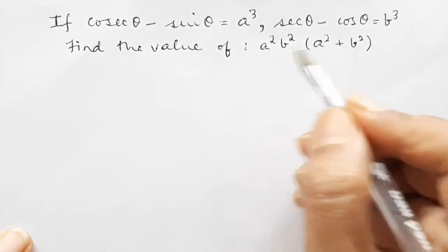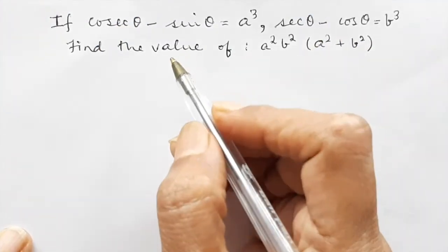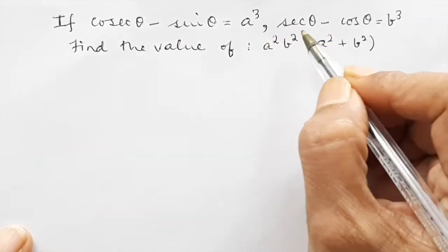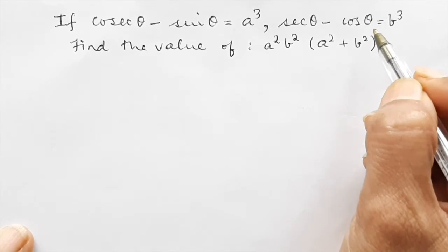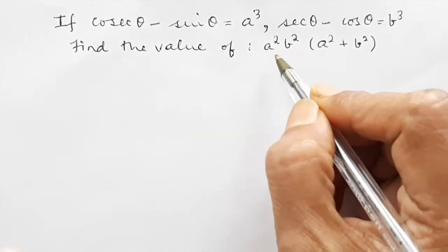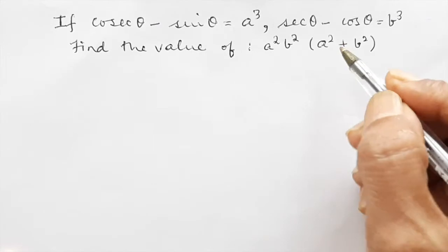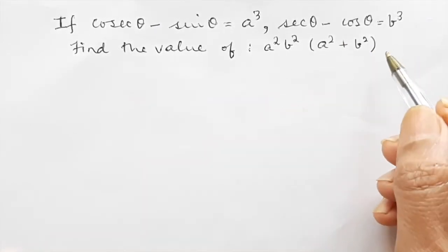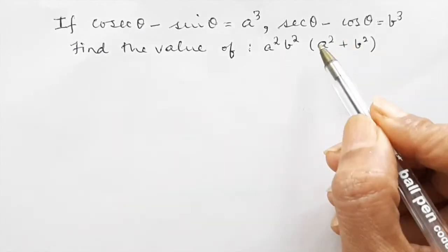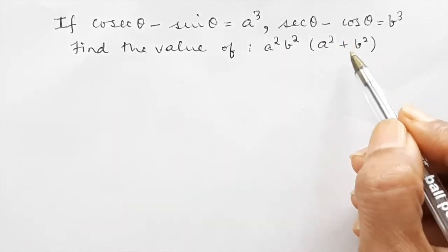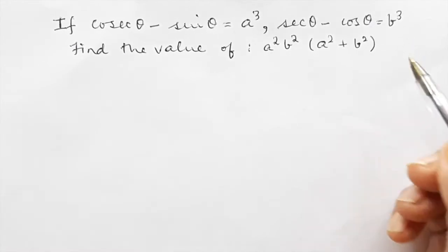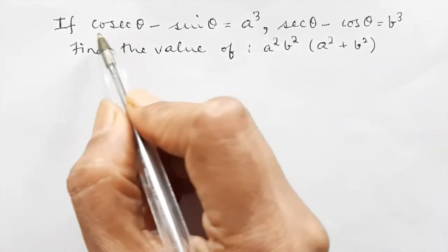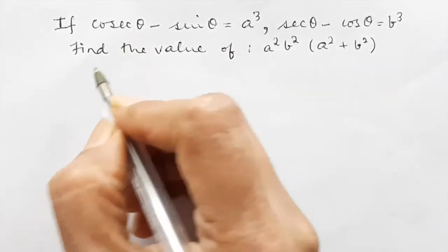This is one of the very frequently asked doubts by students. If cosec θ minus sin θ is equal to a³ and sec θ minus cos θ is equal to b³, find the value of a²b²(a²+b²). This particular question can also be asked as: prove that a²b²(a²+b²) equals a given value. Whether it is a prove question or an evaluate question, we have to take the given data and write it in terms of cos and sin.